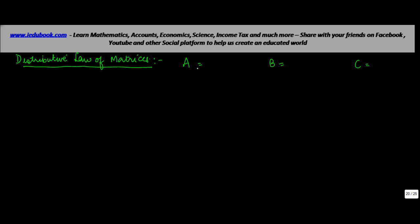Let's now look at the distributive law of matrices. What does the distributive law of matrices say? It says that for any three matrices which are defined — meaning they are capable of multiplication — A into B plus C is equal to AB plus AC, just like you do those algebra calculations. Now let's try and prove this.